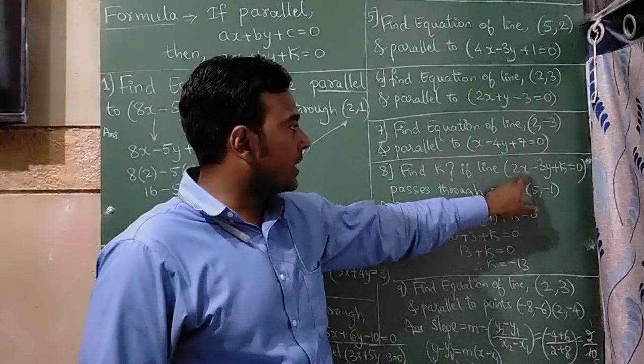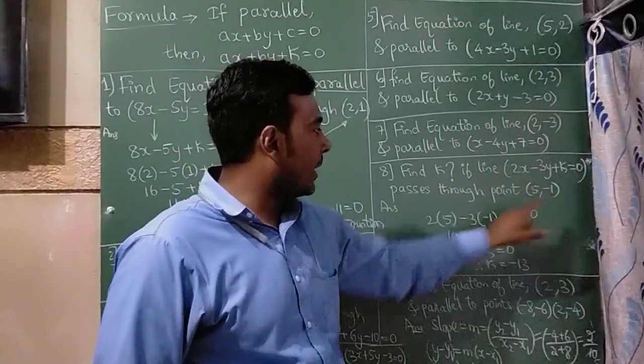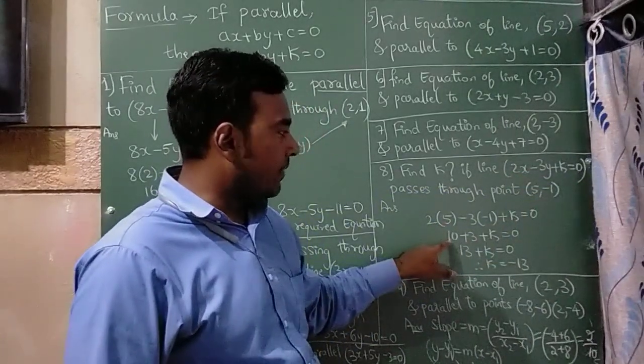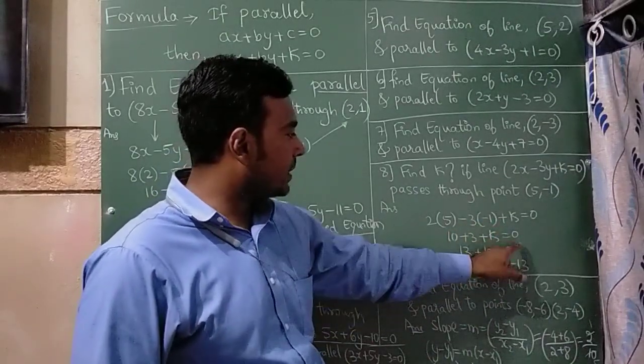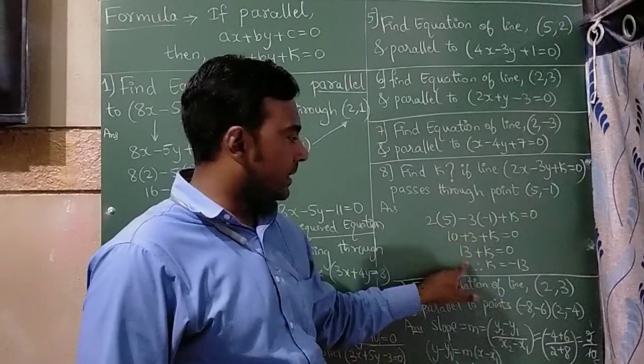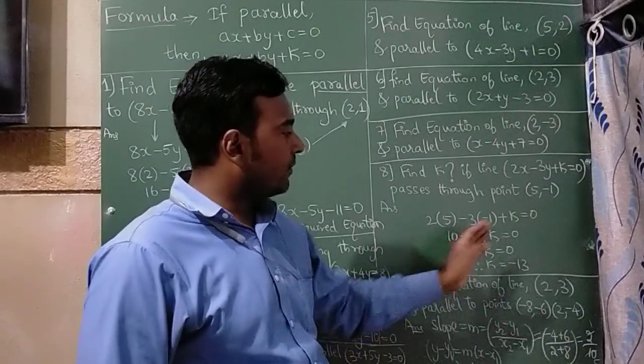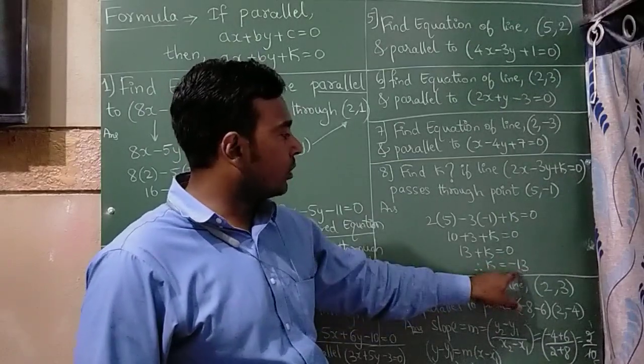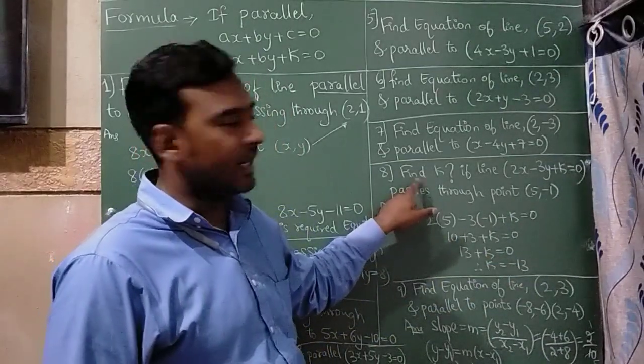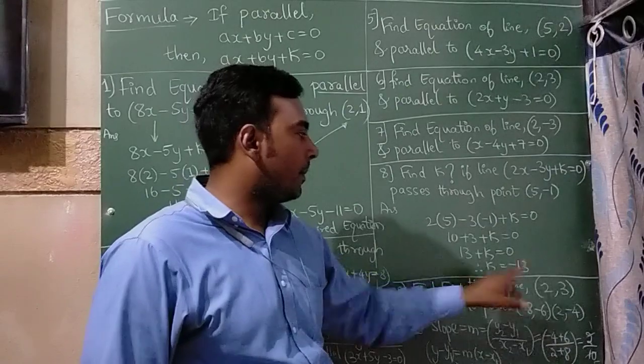Let me substitute x value as 5 y value as minus 1 here. So 2 into 5 is 10 minus 3 into minus 1 is plus 3 plus k is equal to 0. 10 plus 3 is 13. So this 13 if I take on the right hand side it will become minus 13. Therefore k is equal to minus 13. That is what they are asking. Find k means k is equal to minus 13.